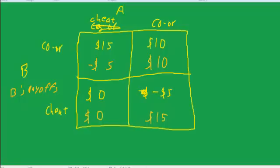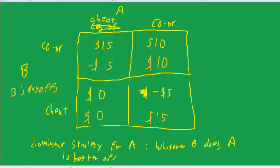And what we look for is a dominant strategy. The dominant strategy for A would be whatever B does, A is better off. So let's say suppose B is going to cheat. If B is going to cheat, then if A cooperates, A loses 5 dollars, but if A cheats, they break even. So if B is going to cheat, A should cheat.